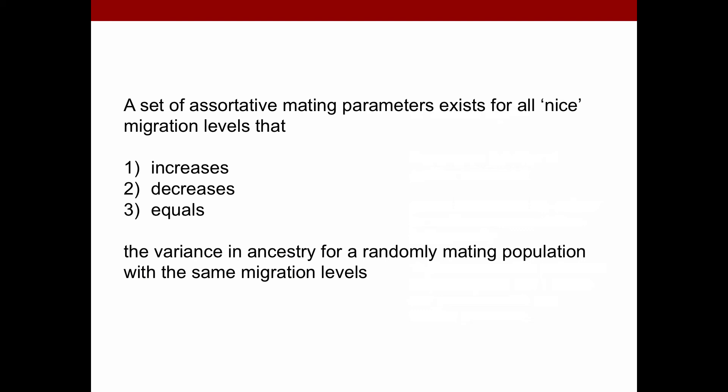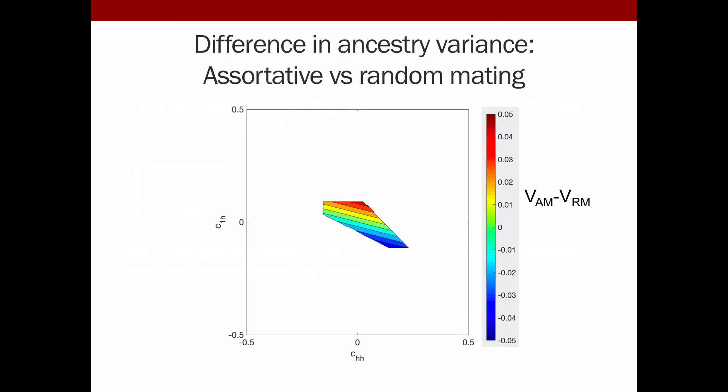More generally, we can say that for, say, a given definition of assortative mating, say CHH is always positive, we can always find a set of assortative mating parameters that either increases, decreases, or makes the same variance as a random mating population with the same migration rates. Plotting that, just as an example, if you specify C11, the preference for S1 for itself as positive, I think it was about 0.01, you can see here for all values of CHH and C1H, sometimes you have above zero and sometimes you have below zero, the difference between the variance in an assortative mating population and a random mating population.